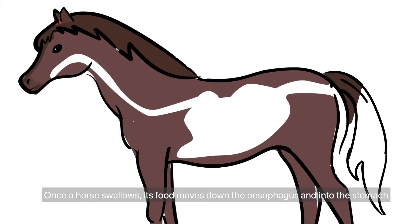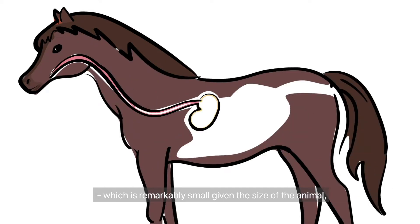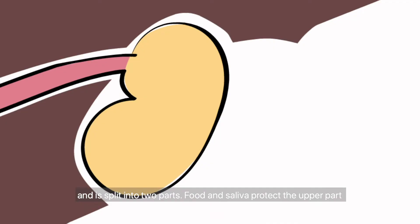Once a horse swallows, its food moves down the oesophagus and into the stomach, which is remarkably small given the size of the animal and is split into two parts.